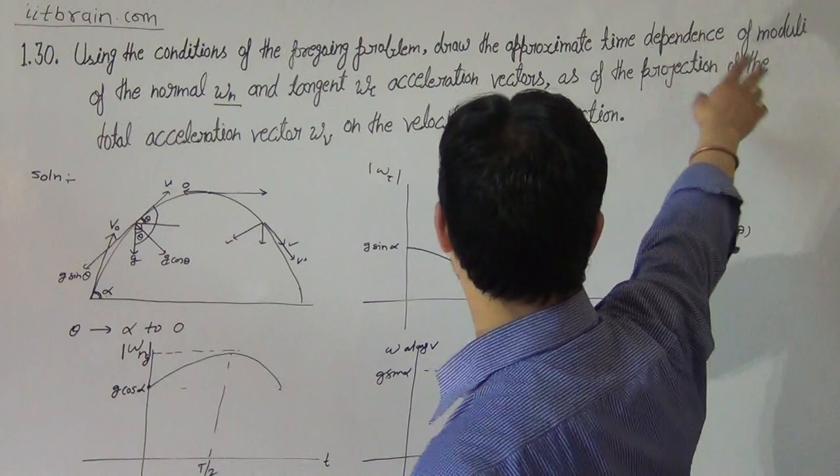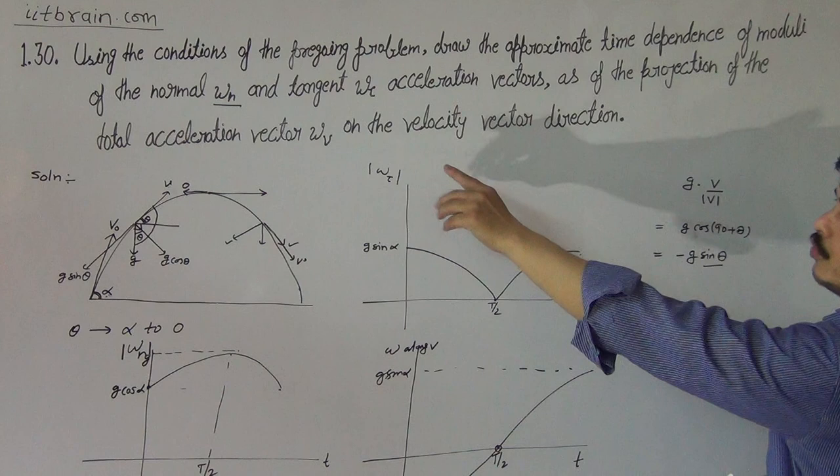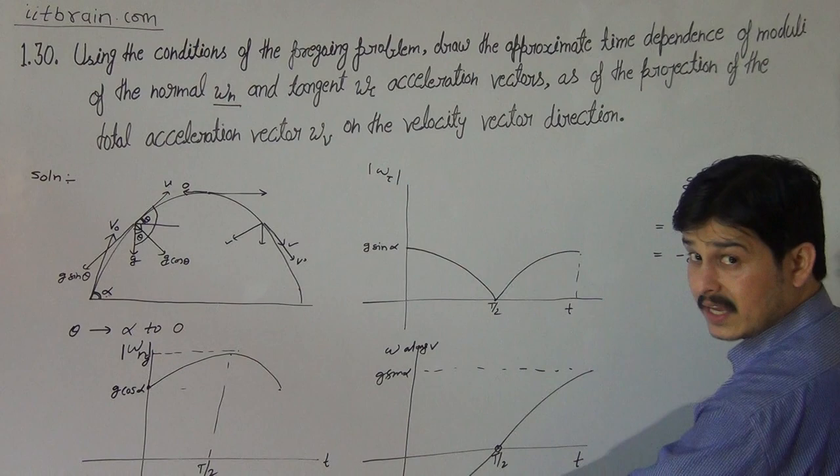So to summarize: the first graph is modulus of normal acceleration versus time (symmetric arch from g·cos(alpha) up to g and back); the second graph is modulus of tangential acceleration versus time (U-shape from g·sin(alpha) down to zero and back up); and the third graph is the component of gravity along velocity versus time (antisymmetric, going from minus g·sin(alpha) through zero to plus g·sin(alpha)). This completes problem 1.30. Thank you.